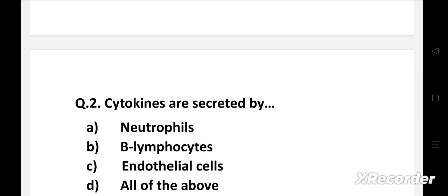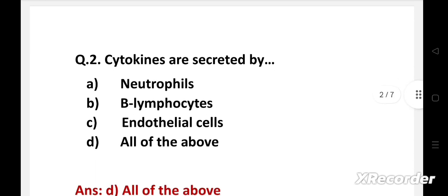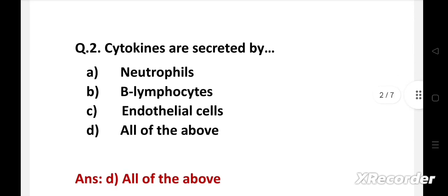Question number two: Cytokines are secreted by — option A: neutrophils, B: B lymphocytes, C: endothelial cells, D: all of the above. The right answer is option D: all of the above. Cytokines are secreted by neutrophils, endothelial cells, and B lymphocytes.